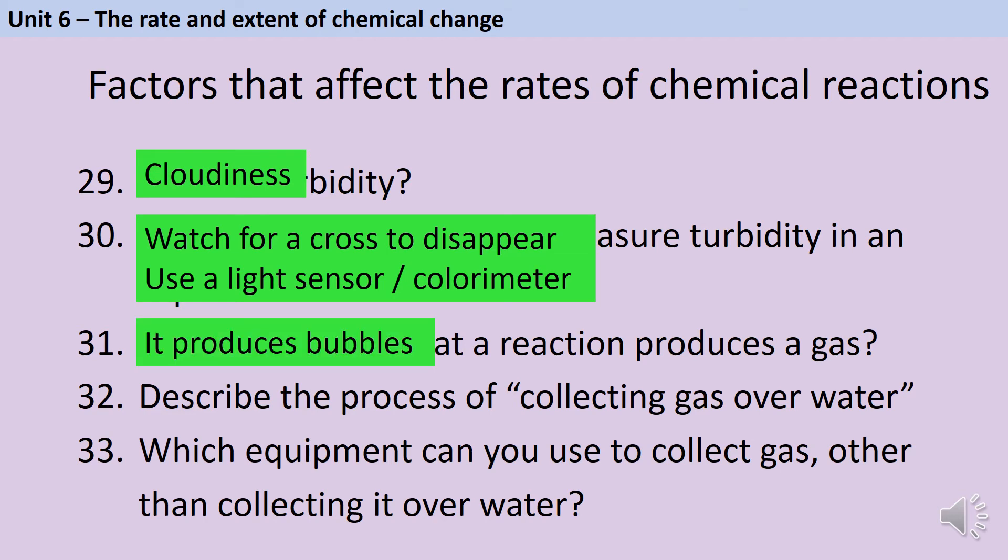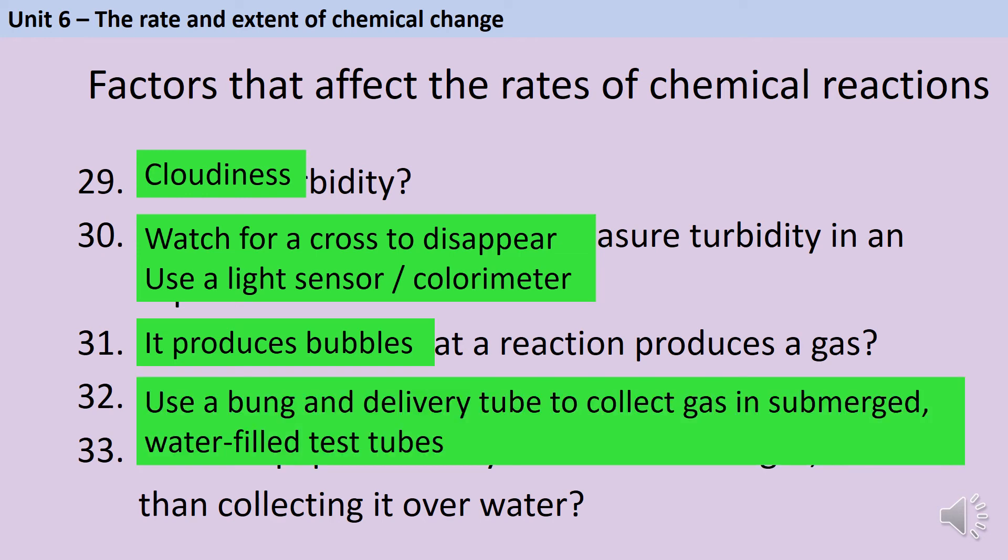A reaction that produces a gas will produce bubbles, and collecting gas over water you've probably also done in your science lessons. This is a process where you use a bung and a delivery tube to collect the gas being produced in a conical flask or sometimes a boiling tube. You have a big bowl of water with a measuring cylinder inside. The measuring cylinder is full of water, then you put the delivery tube from your reaction into that measuring cylinder. The gas being produced pushes the water out of the measuring cylinder and allows you to measure how much gas has been produced. You could also measure this using a gas syringe.